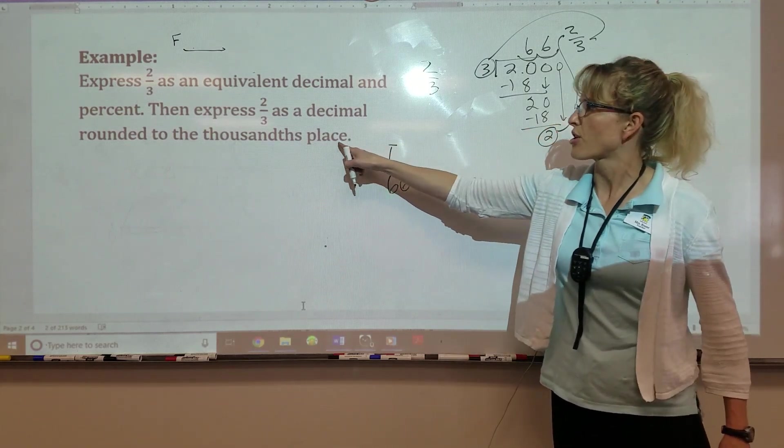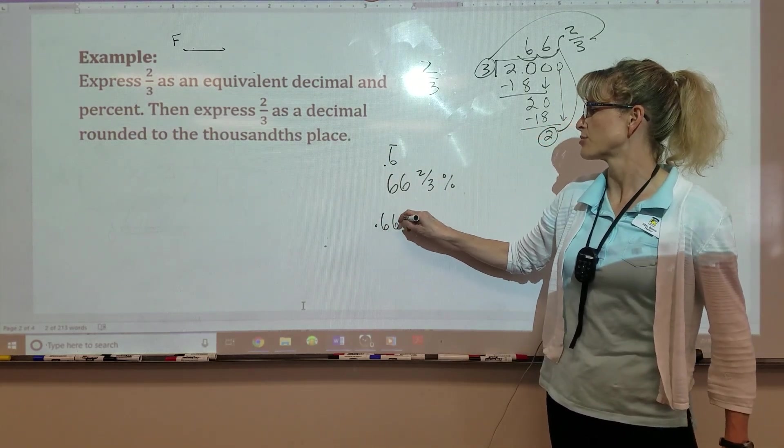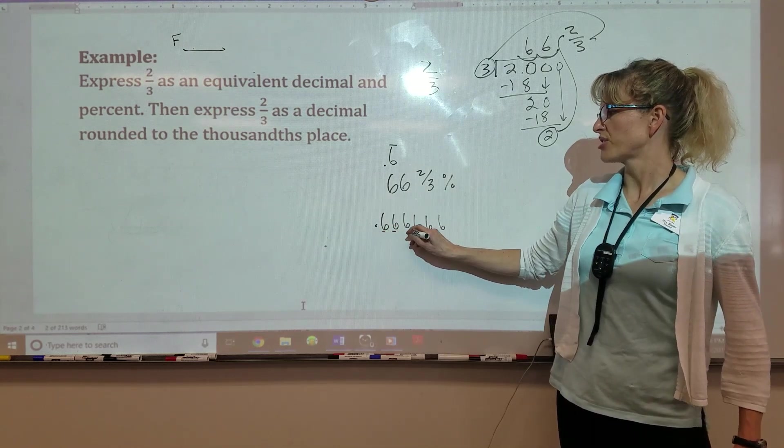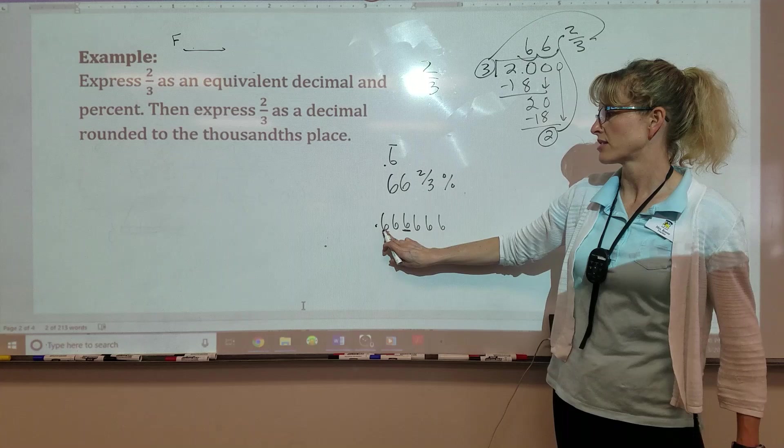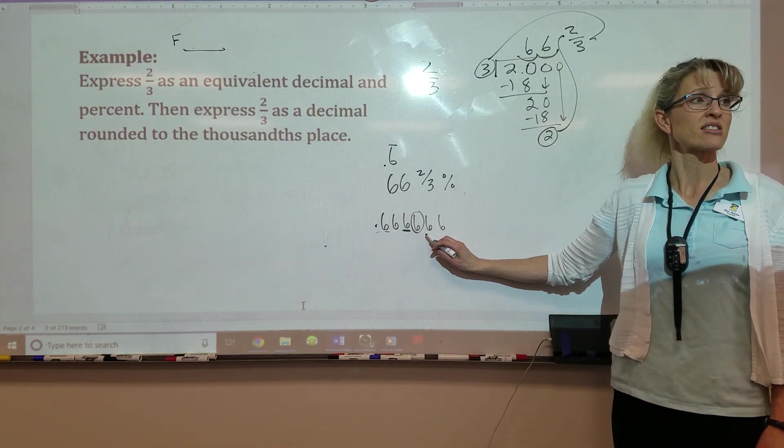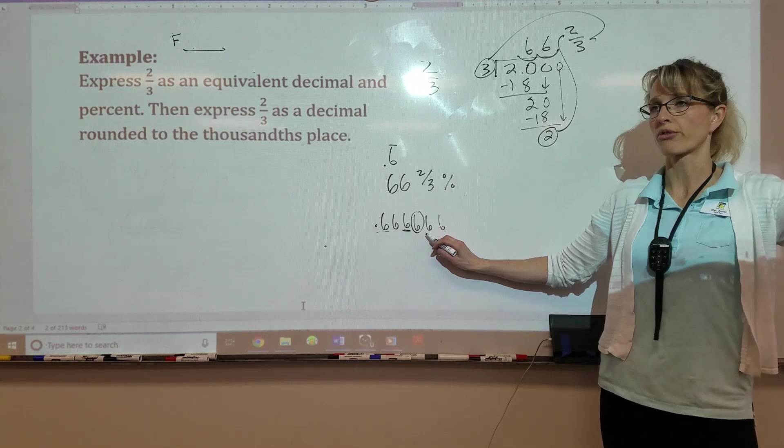So two-thirds is 66 and two-thirds percent. Last step, it says round it to the thousandths place. Well, we know the decimal really repeats on and on. Tens place, hundreds place, thousands place. Check the digit next to it. Is it five or more? Make it soar or four or less? Let it rest.